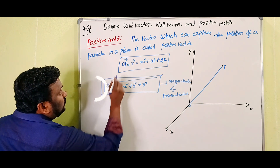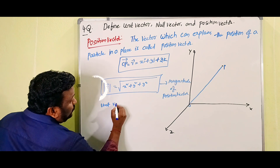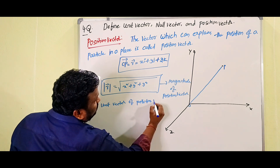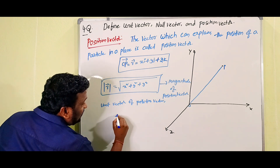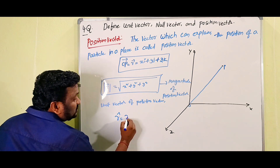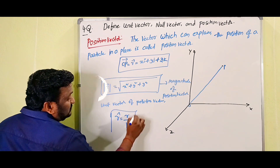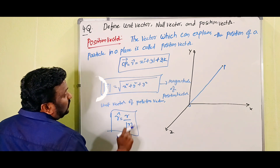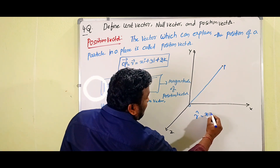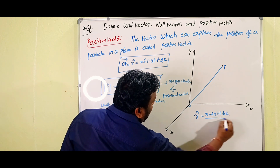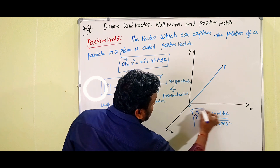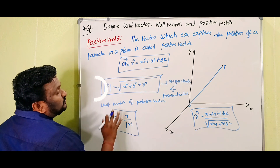And now, the unit vector of the position vector. We write it as r-cap. R-cap is equal to r by mod of r. So r-cap equals (x·i + y·j + z·k) divided by the square root of x² + y² + z². This is the unit vector of the position vector.